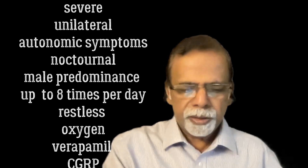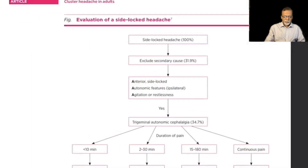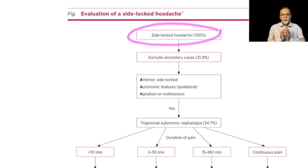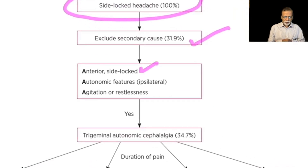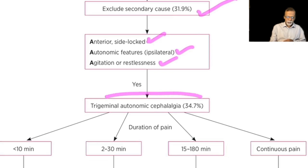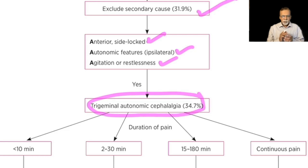Cluster headache is a side-locked headache — that is, it is unilateral. When you encounter a unilateral headache, always exclude secondary causes; imaging may be required. When the pain is anterior and side-locked, autonomic symptoms are ipsilateral, and agitation and restlessness are present, it falls under the group of trigeminal autonomic cephalalgias. Autonomic symptoms can include nasal congestion and lacrimation.